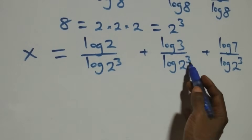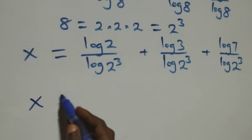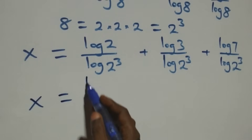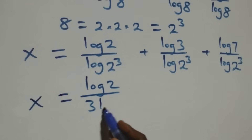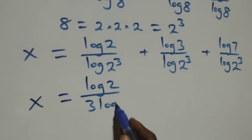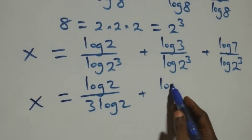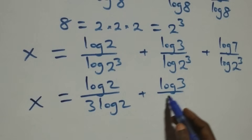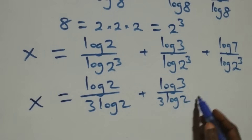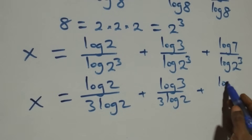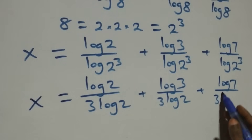Applying the power law to the denominator, log 2 cubed equals 3 log 2. So we have x equals log 2 over 3 log 2, plus log 3 over 3 log 2, plus log 7 over 3 log 2.